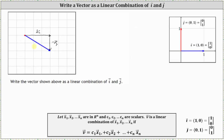We can write the given vector — let's call it vector x sub one — as a linear combination of vectors i and j, as vector x is equal to three times vector i minus two times vector j. This also indicates that the component form of vector x using angle brackets would be three comma negative two, or using a column matrix with entries three, negative two.